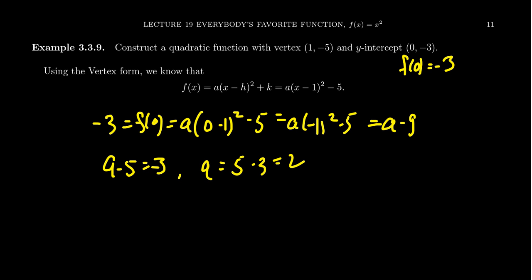And so this tells us that our quadratic function, let's call it f of x, equals 2 times x minus 1 squared minus 5, which if we want to, we can just leave it in the vertex form.